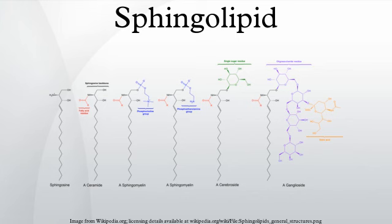Regarding types, simple sphingolipids, which include the sphingoid bases and ceramides, make up the early products of the sphingolipid synthetic pathways. Sphingoid bases are the fundamental building blocks of all sphingolipids. The main mammalian sphingoid bases are dihydrosphingosine and sphingosine, while dihydrosphingosine and phytosphingosine are the principal sphingoid bases in yeast.